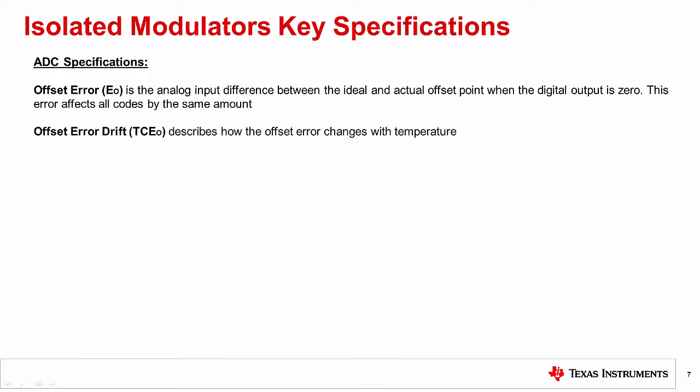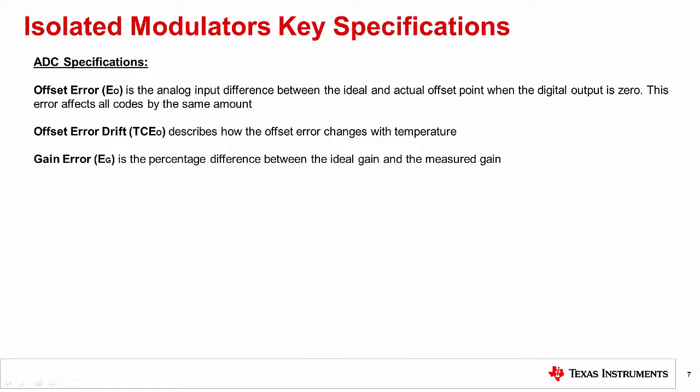Next is gain error, which is the percentage difference between the ideal gain and the measured gain. To describe the changes in gain over temperature, the gain error drift parameter is used.